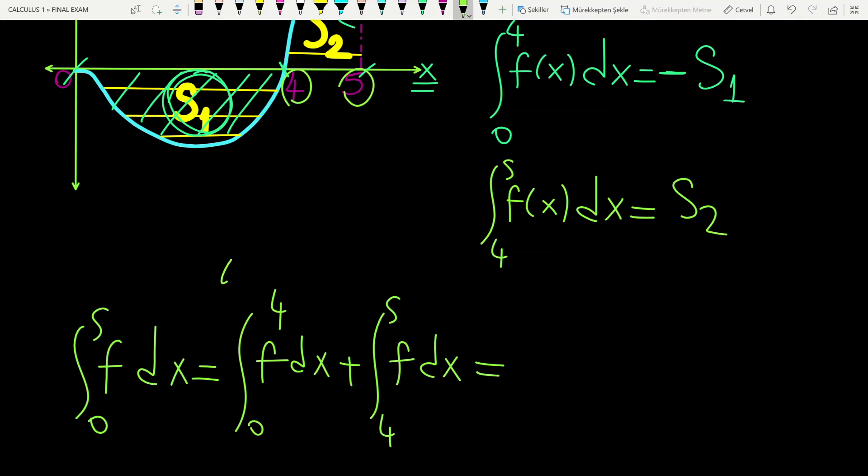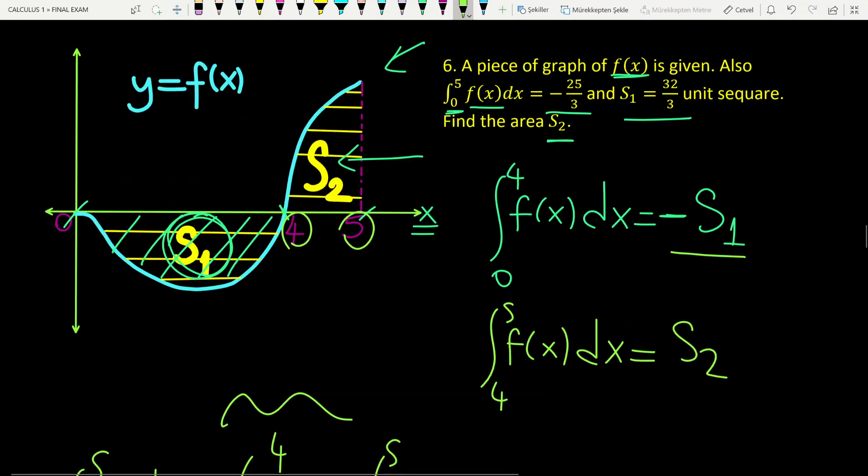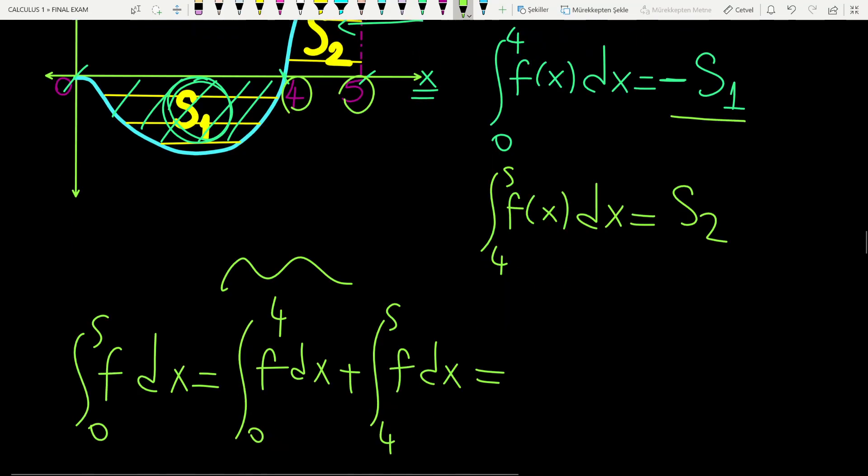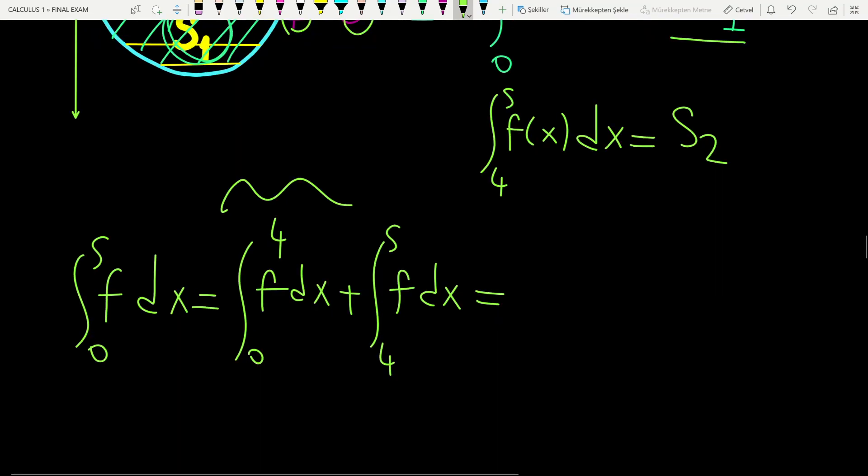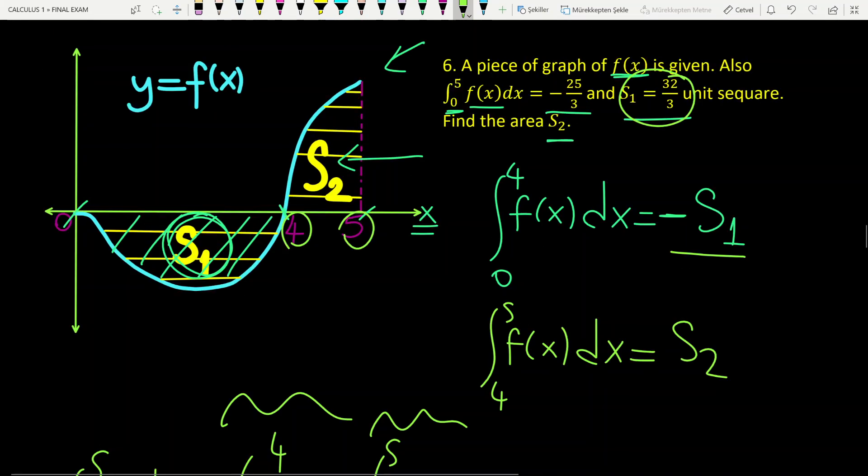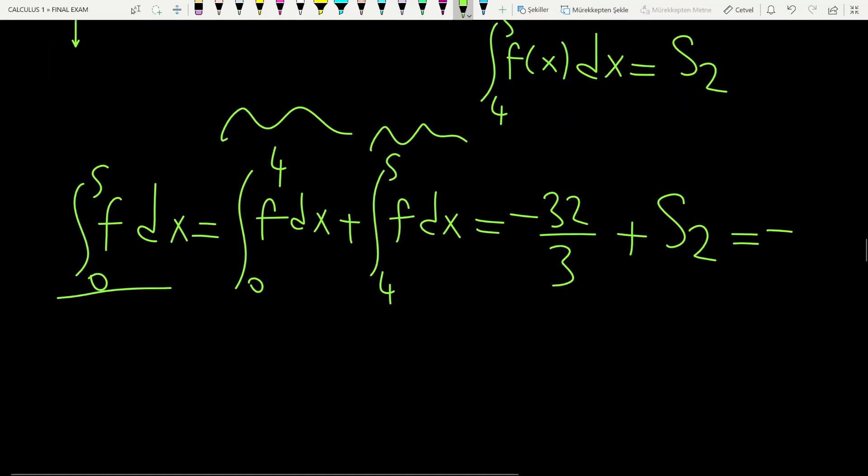This equals minus S1, which is -32/3, plus S2. The integral from 0 to 5 is given in the question as -25/3, so this expression equals -25/3.